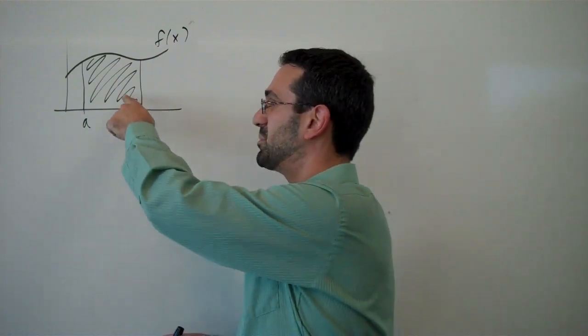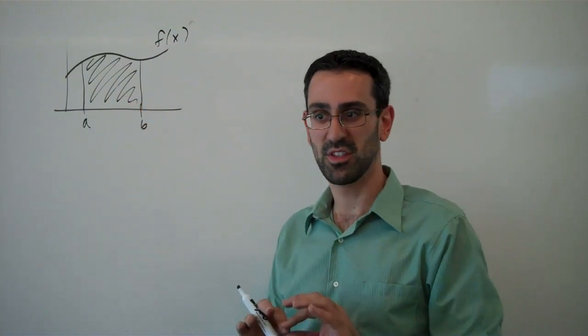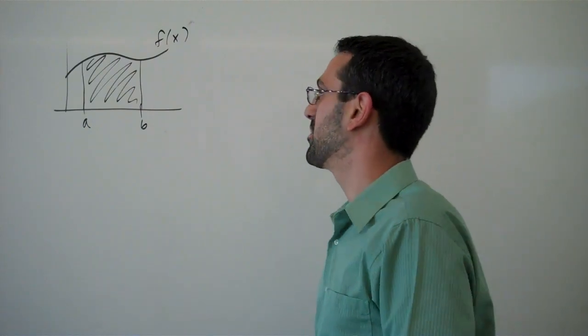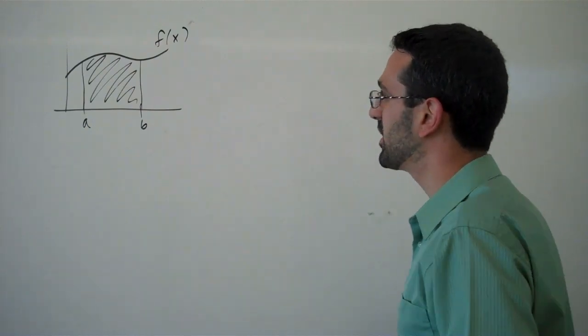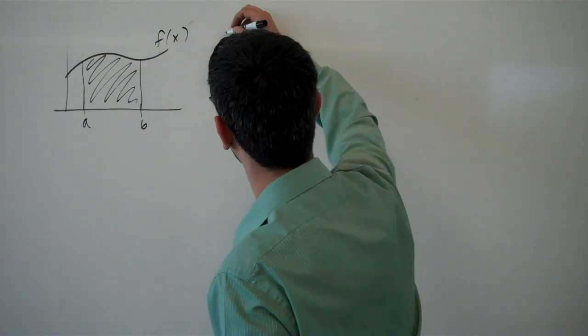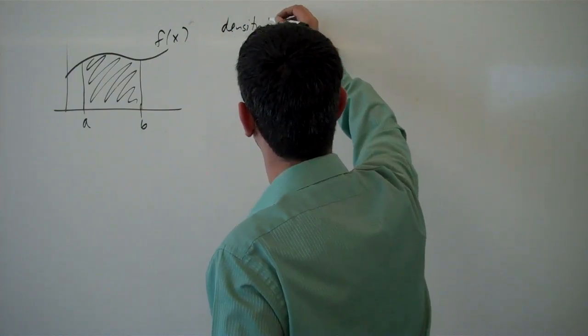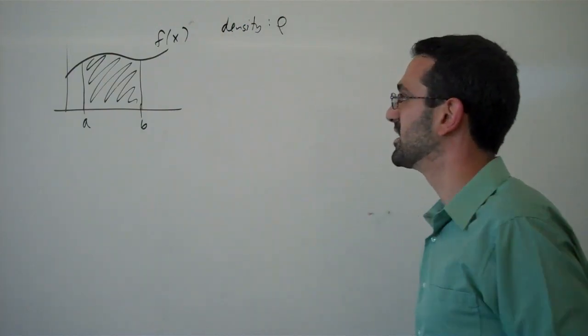We're imagining that this is being cut out of some sort of material of uniform density. We're going to imagine uniform density here, and we'll even say that the density is some value rho. Again, that's a constant in this case.